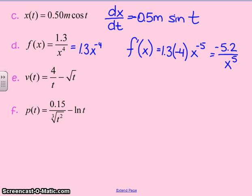Again, we're going to have to rewrite things for our next one. 4 divided by t. That's the same thing as saying 4 times t to the negative 1 minus the square root of t. That's the same thing as saying t to the 1 half. Both of those two terms fall under the same rule we've been using.